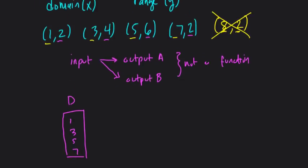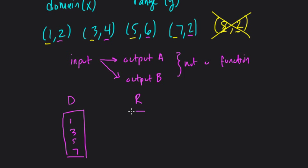Did I get that right? Yeah, 1, 3, 5, 7. And our range: 2, 4, 6. So you can literally just draw the lines of how they map it. 1 maps to 2 in the point (1,2). 3 maps to 4, 5 maps to 6, and 7 also maps to 2.